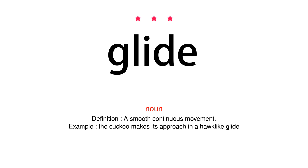Noun: A smooth continuous movement. The cuckoo makes its approach in a hawk-like glide.